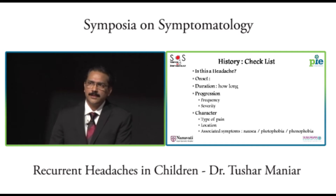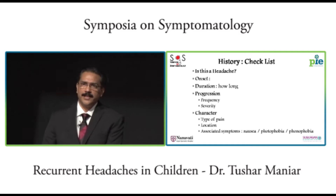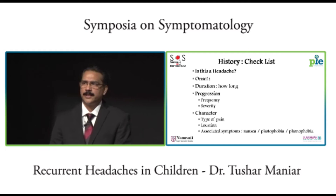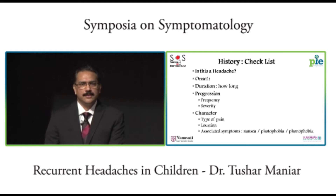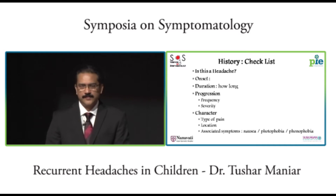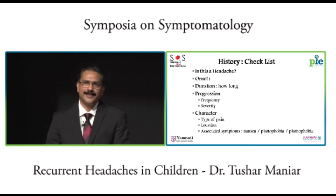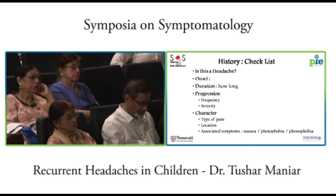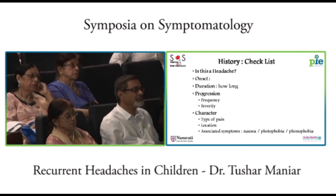Associated symptoms are very important, as in a limp, and will give you a clue whether this is a primary or a secondary headache. Primary headache is because of problems of the brain — in the form of migraine, tension type headache, etc. Secondary headache is because of a systemic, extracranial, or intracranial cause.